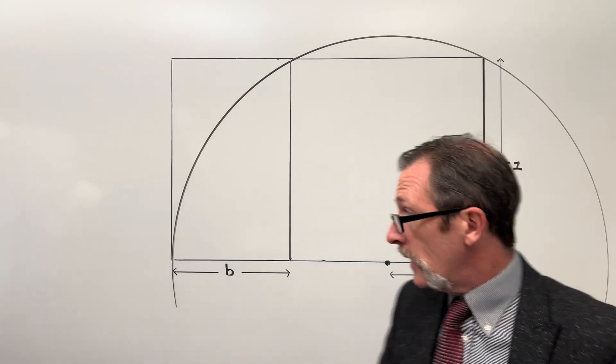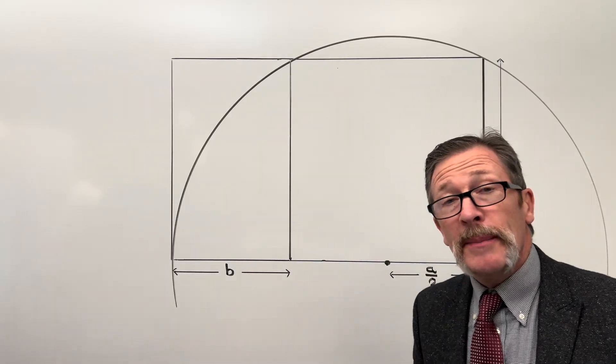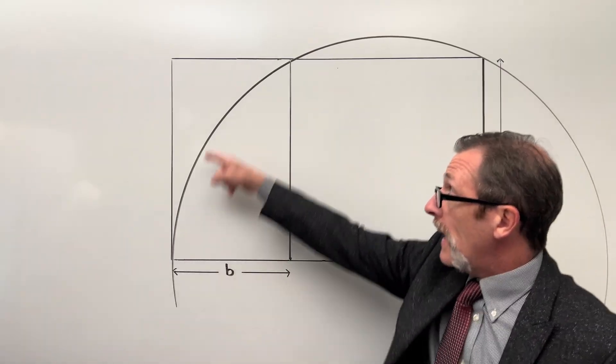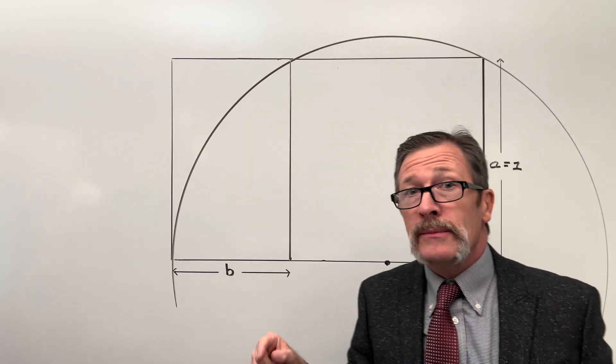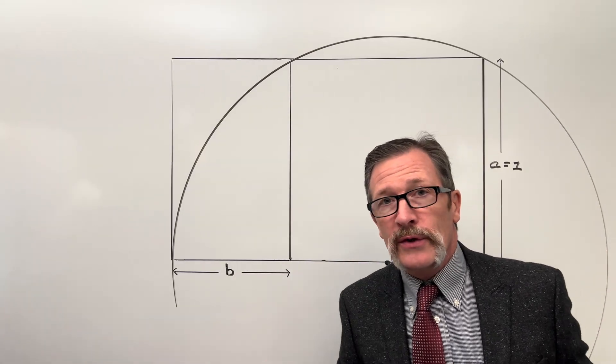For today's quiz we're trying to solve for side B. Let me explain. We've got a massive rectangle here and it's a special rectangle. We'll call it the golden rectangle.